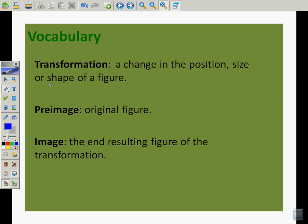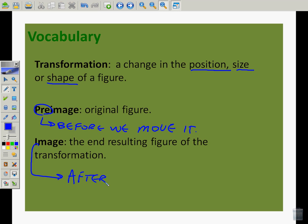A transformation is a change in the position, size, or shape of a figure. Notice there are three different things that can happen: position, size, or shape. We are particularly going to talk about position today. The preimage is the original figure before we move it. The image is the end-resulting figure of the transformation, after we do the transformation.